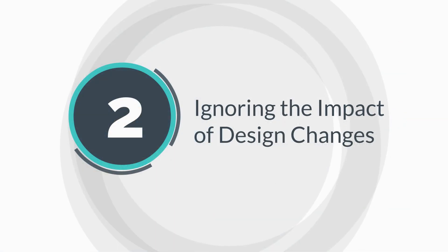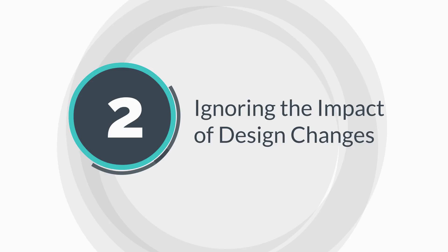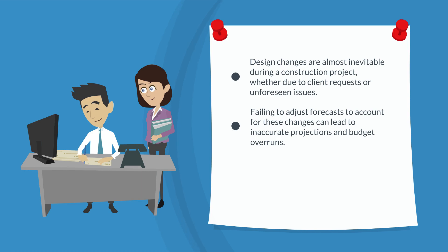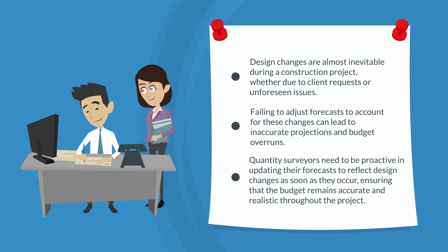Mistake two: ignoring the impact of design changes. Design changes are almost inevitable during a construction project, whether due to client requests or unforeseen issues. However, these changes can have a significant impact on cost. Failing to adjust the forecast to account for these changes can lead to inaccurate projections and budget overruns. Quantity surveyors need to be proactive in updating their forecast to reflect design changes as soon as they occur, ensuring that the budget remains accurate and realistic throughout the project.